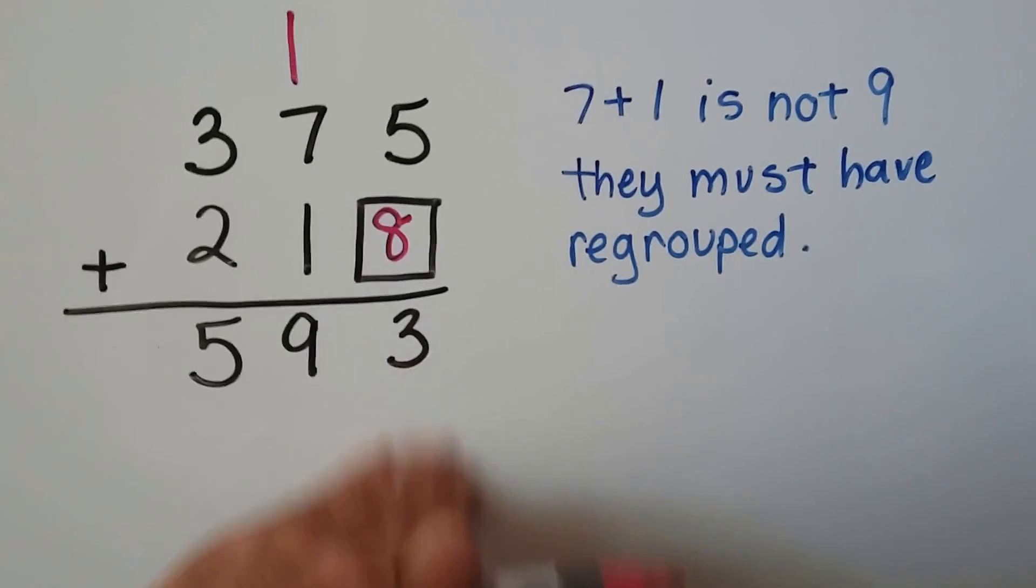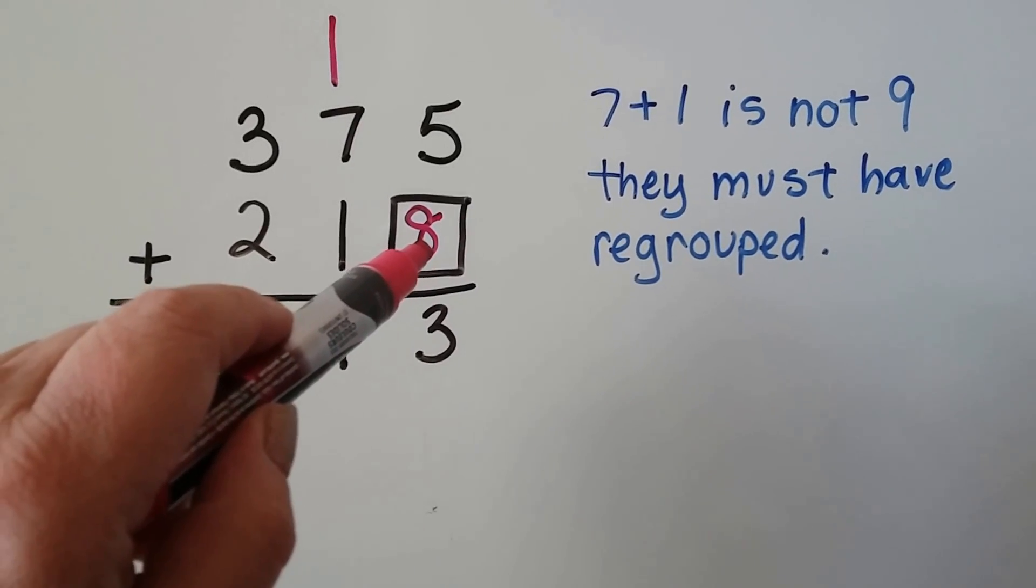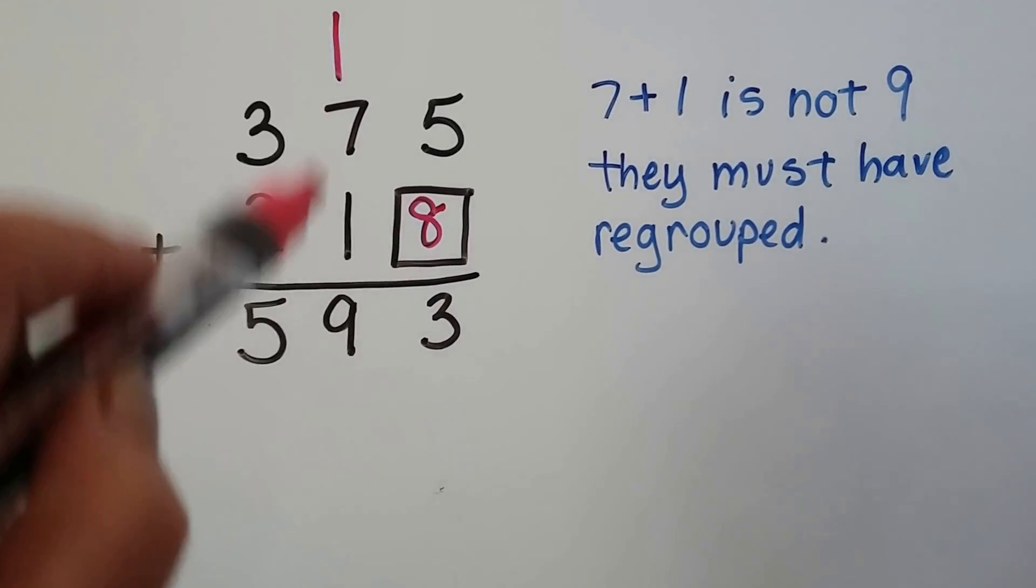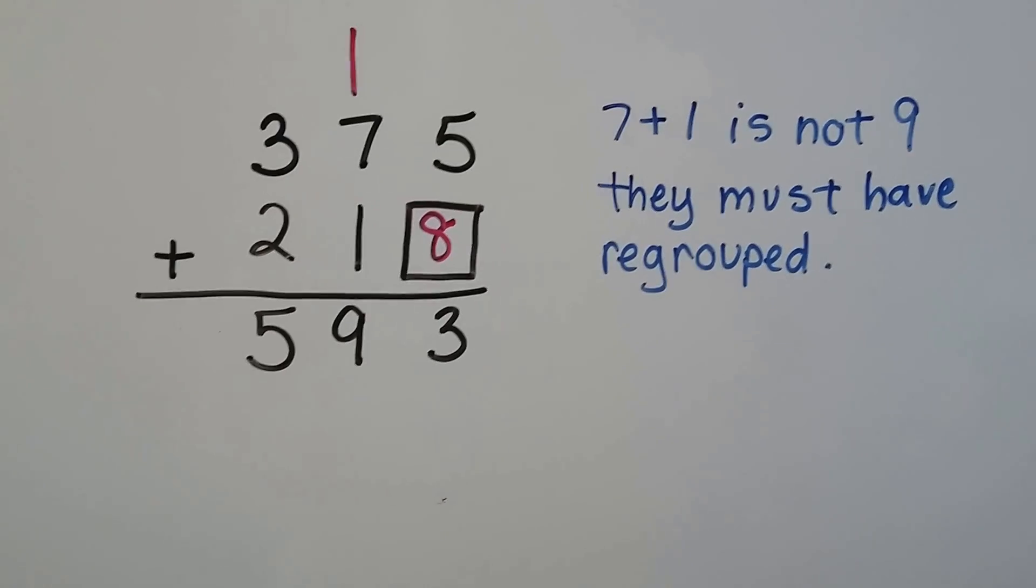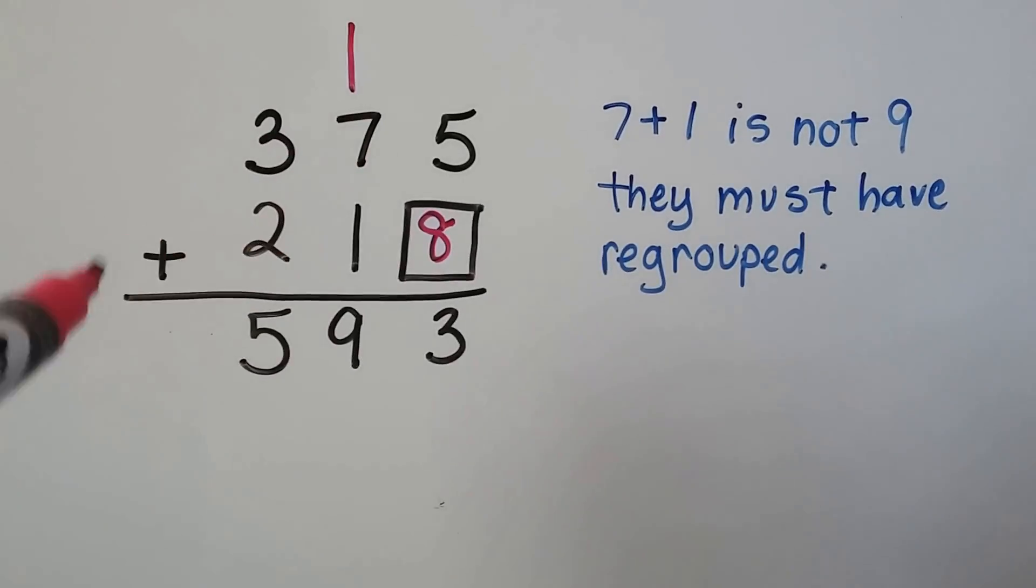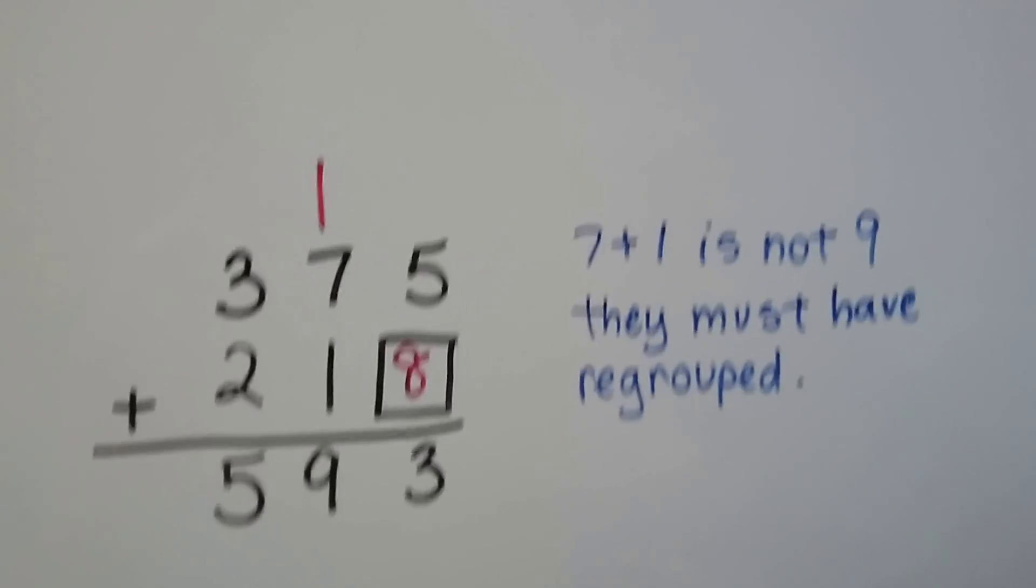Now, if we look at this, we do 5 plus 8. That's 13. We regroup the 1 and put the 3 down. 7, 8, 9, and 3 plus 2 is 5. That works. So you're going to have to figure out the regrouping and what they did. When you see 7 plus 1 and a 9, you know that they must have regrouped. That's a clue.